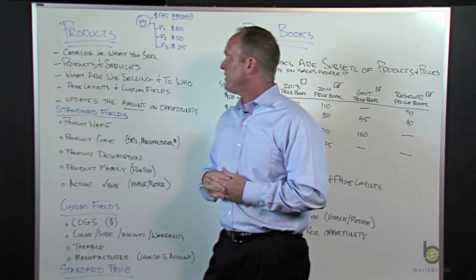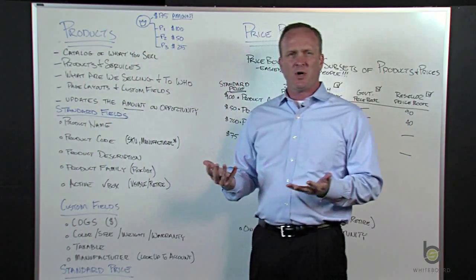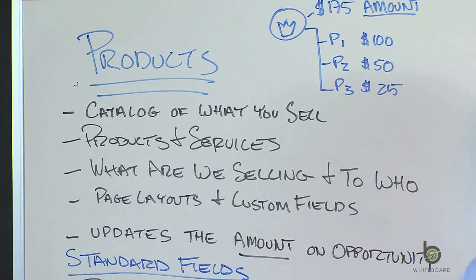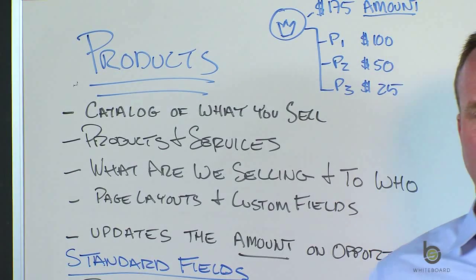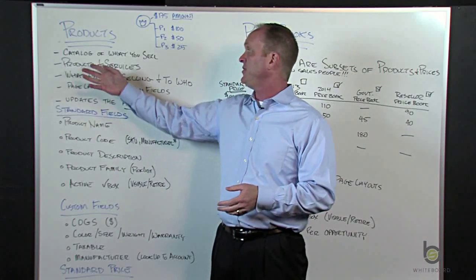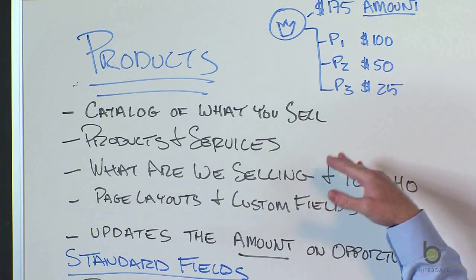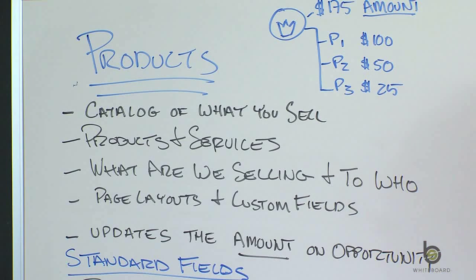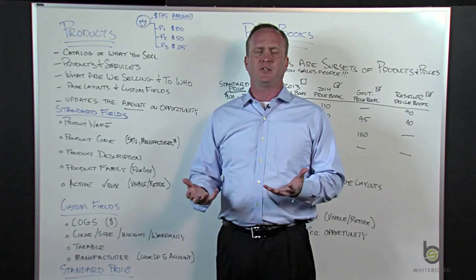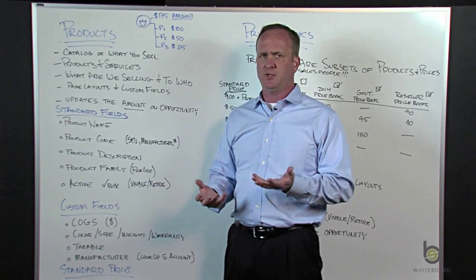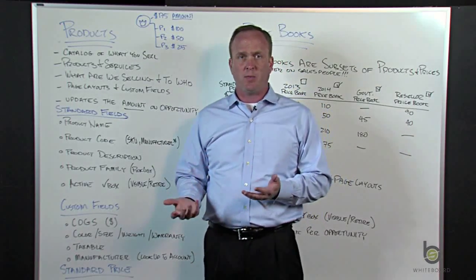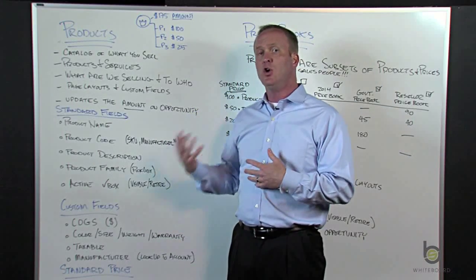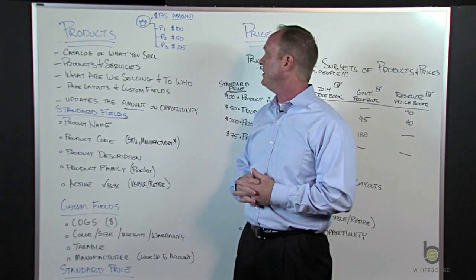So what's a product? Why would we have products? A product is really a catalog of the things that you sell. What you can sell as a product could be a physical product, or it could be a service — professional services, consulting services, whatever it might be. Why would we go through this exercise of associating products to an opportunity? It really helps us with reporting, because then we can tell through a report what we're selling a lot of, who we're selling to, and for how much.